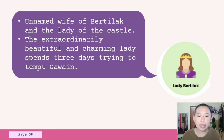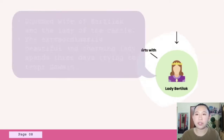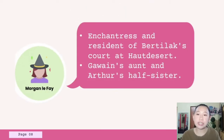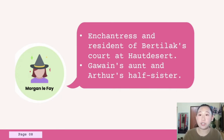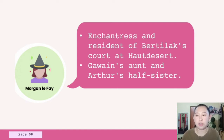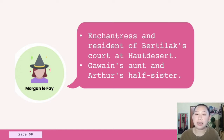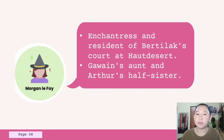Flirtatious and intelligent, Bertilak's wife ultimately turns out to be another pawn in Morgan le Fay's plot. Our second-to-last character is Morgan le Fay. She is an enchantress and resident of Bertilak's court. She is also Gawain's aunt and Arthur's half-sister. The Arthurian tradition typically portrays Morgan as a powerful sorceress trained by Merlin, as well as the half-sister of King Arthur. Not until the last 100 lines do we discover that the old woman at the castle is Morgan le Fay and that she has controlled the poem's entire action from beginning to end. Morgan appears as an enemy of Camelot, one who claims to cause as much trouble for her half-brother and his followers as she can.